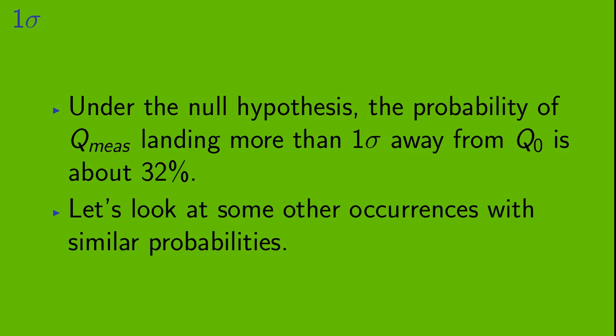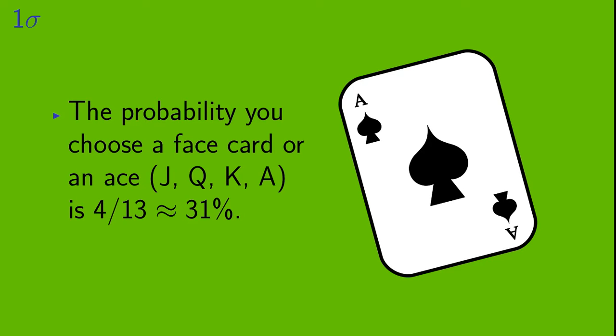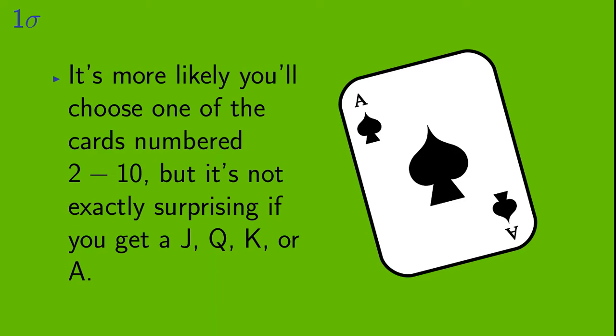Let's look at some other occurrences with similar probabilities. Okay, so example 1. Let's say you choose a card at random from a standard deck. The probability you choose a face card or an ace, so the probability that you choose a jack or a queen or a king or an ace, is 4 thirteenths, or about 31%. It's more likely you'll choose one of the cards numbered 2 through 10, but it's not exactly surprising if you get a jack, queen, king, or ace.